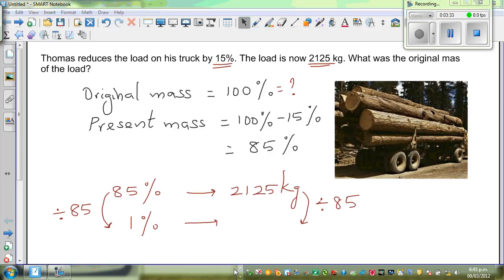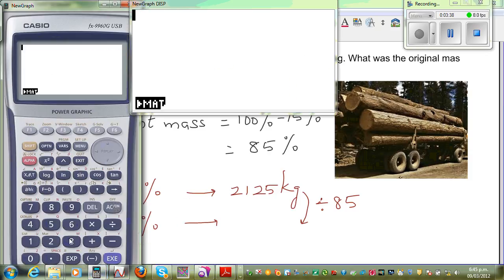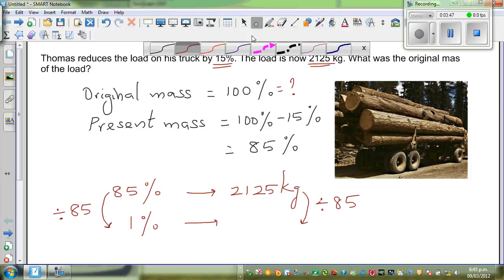So let me get my calculator out. So this is my calculator. This is 2125 divided by 85, which is 25 kg. So 1% is 25 kg.